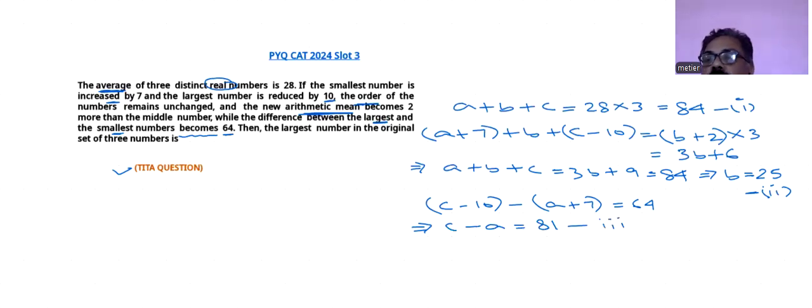Now from equation number 2, what you can do is collect the value of b, which is 25, and put it here. So what value you are getting here is that a plus c will be coming as 84 minus 25, which is 59.